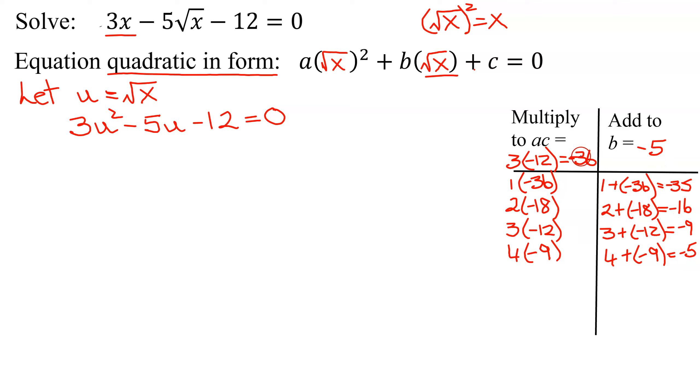Does 3 divide into negative 36? Yes, negative 12 times. It didn't work. But finally, does 4 divide into negative 36? Yes, 4 times negative 9 is negative 36, and 4 plus negative 9 is a negative 5, which is the number I'm looking for.